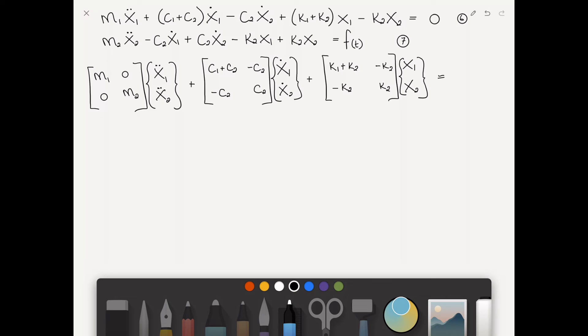Finally the stiffness matrix, which looks like the damping matrix: k1 plus k2, minus k2, minus k2, k2, multiplying the coordinates x1, x2. That equals the vector 0, f of t. This is equation 8, and we are done.